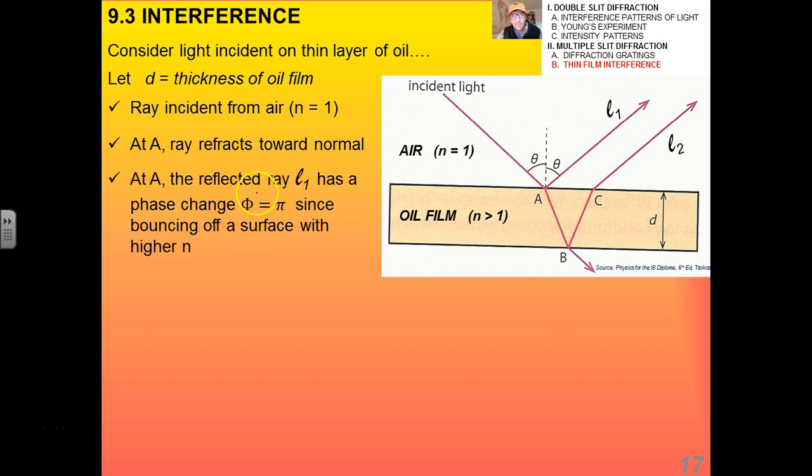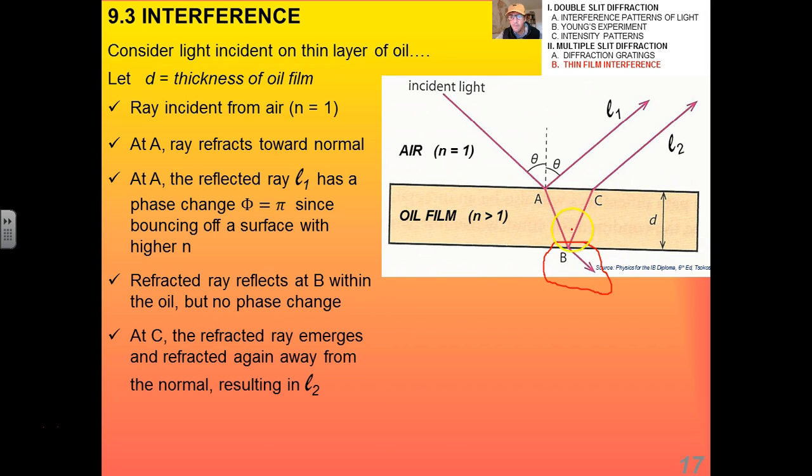Here's my L1 and L2, again, labeled here. At A, the reflected ray, which is what I'm calling L1, has a phase change of π because it's bouncing off a surface with a higher index of refraction. The refracted ray reflects at B within the oil and comes back up. Because it's reflecting within a material that has a constant index of refraction, there's going to be no phase change there. It's going to come from B to C. It's going to trace out that path, as shown. At C, once that initially refracted ray bounces back up and gets to C, it emerges again. Because it's going from a substance with a greater index of refraction to a lesser one, it will refract again away from the normal, resulting in L2. What you end up with is you end up with two rays that are interfering with one another.